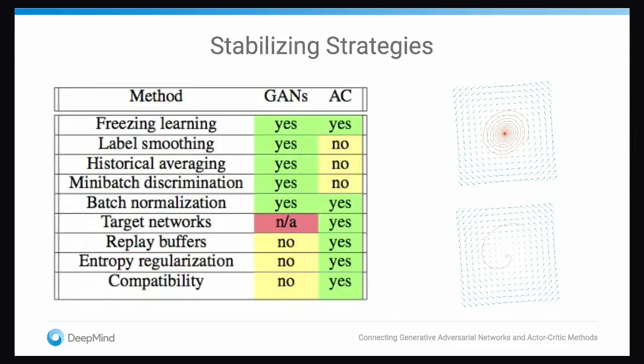So this connection is all well and good, but how can we actually use this? Just as there are various tricks of the trade for stabilizing GANs, the actor-critic community also has a large number of heuristics and methods, some of which have not yet been applied to GANs, and ideas from GANs have not yet been applied to actor-critic algorithms. Anybody very interested in developing new methods for training GANs, I would encourage them to look at algorithms like deterministic policy gradient and consider developing algorithms that work for a broader class of problems. If you're interested in learning more about what these tricks are, come talk to me and come see the poster.